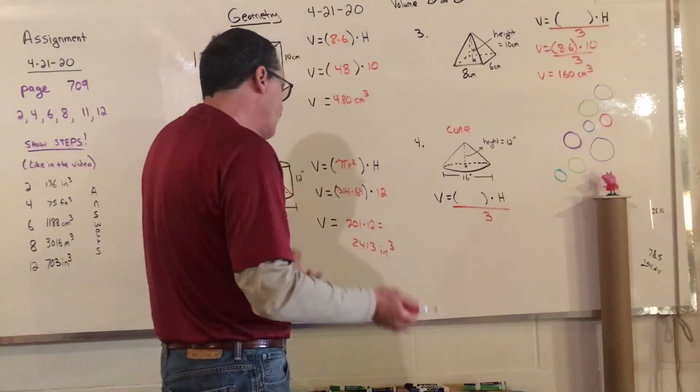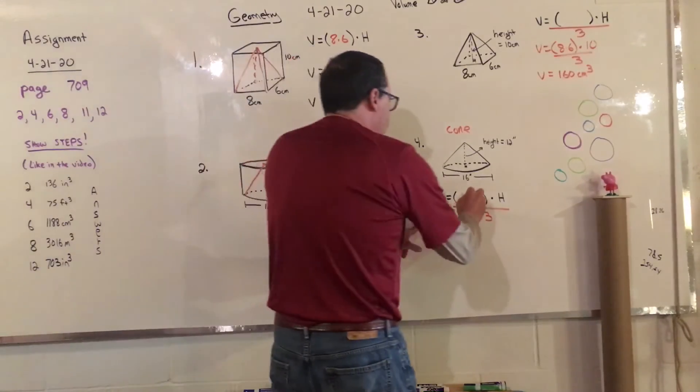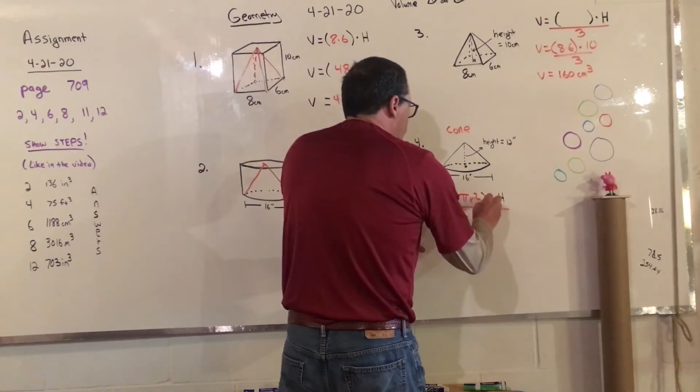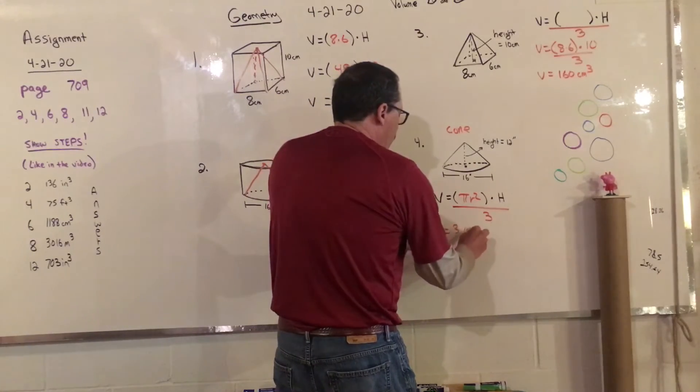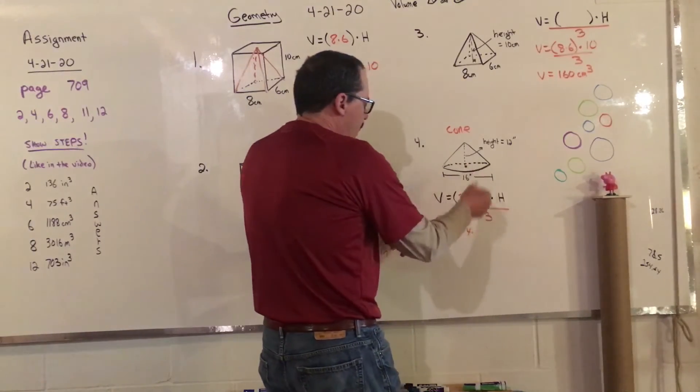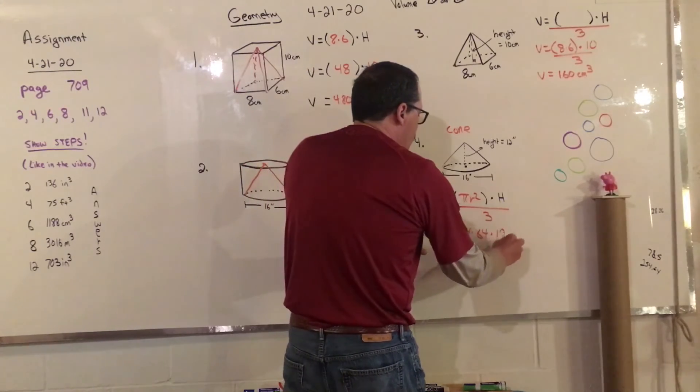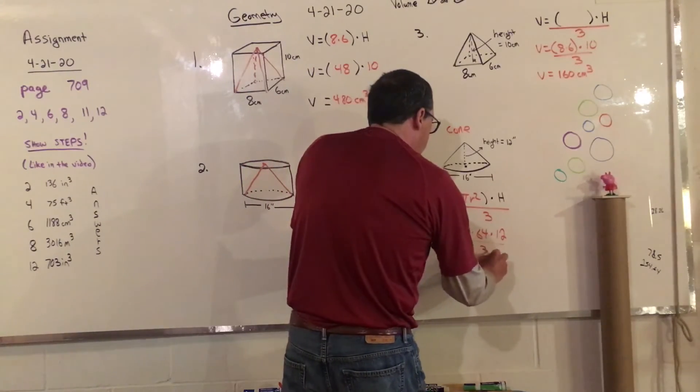So we're going to do basically the same thing here. It's going to be pi r squared for the area of the base because the bottom is a circle. So V equals 3.14, the radius is 8 again, and 8 squared is 64, times 12, then divided by 3.